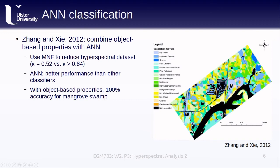Including object-based texture properties was extremely useful, with an accuracy of 100% for mangrove swamps, which is an important land cover type in the Florida Everglades. The authors also found high accuracy for identification of invasive plant species — an important consideration for critical wetland habitats such as the Everglades. This study combines a number of different approaches that we've introduced before: object-based analysis, machine learning methods, and hyperspectral analyses.